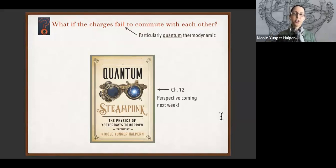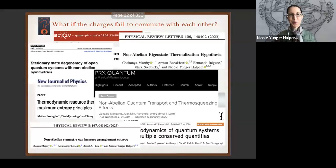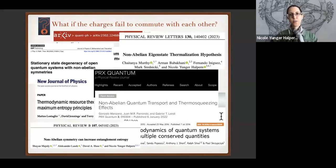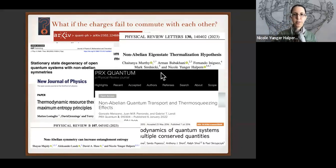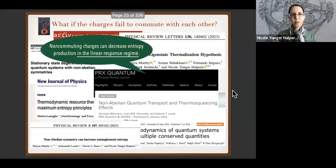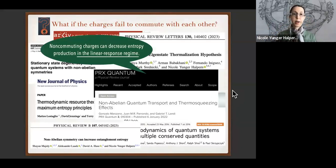What does happen if charges fail to commute in quantum thermodynamics? Quite a few changes have been noted already — this is just a small sampling of the papers written. The community has found that derivations of thermal states break down, average entanglement across the system can increase, and according to one paper, entropy production can decrease in the linear response regime. This talk concerns what happens to entropy production when charges fail to commute arbitrarily far from equilibrium.